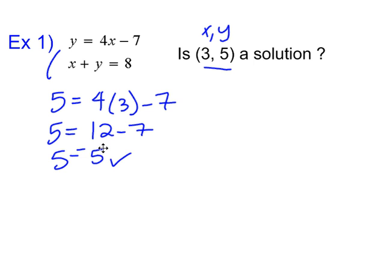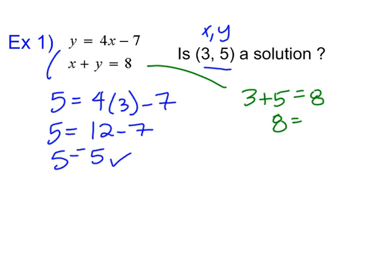So far it checks out and it is a solution to the first equation. Let's apply it to the second one: three plus five equals eight. Again we can see that it is a solution — so it's on both of these lines. It must be where they collide, so yes, it is a solution.